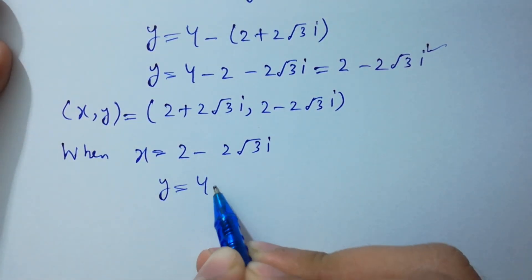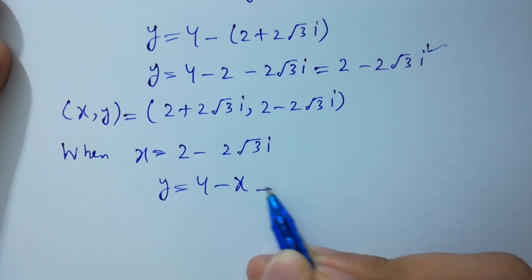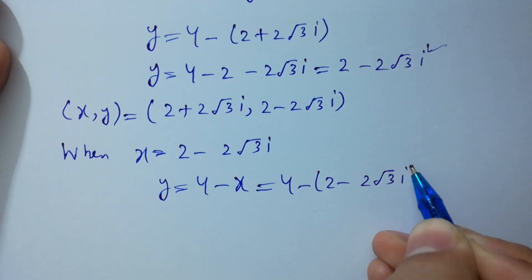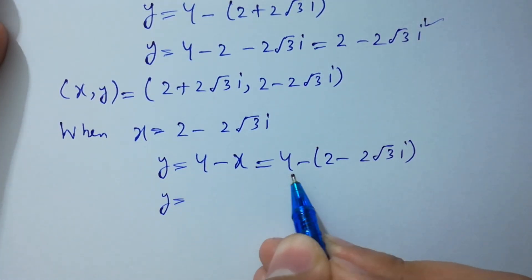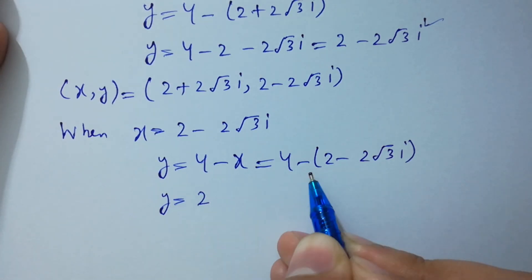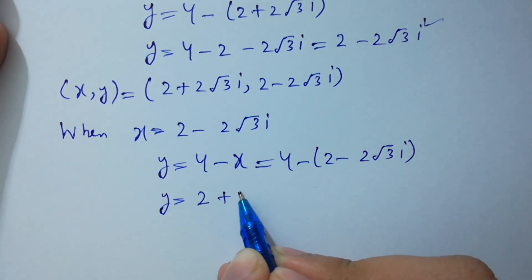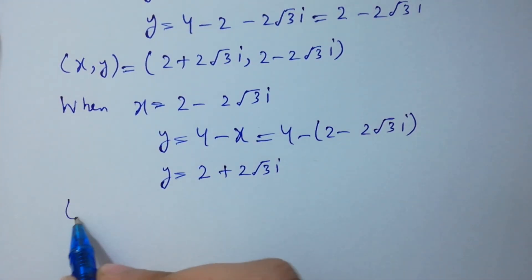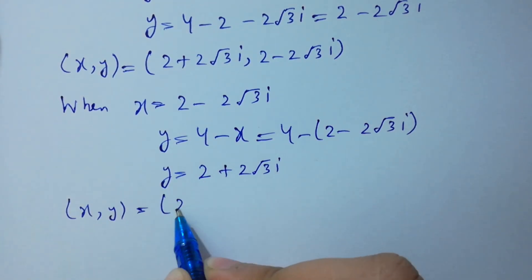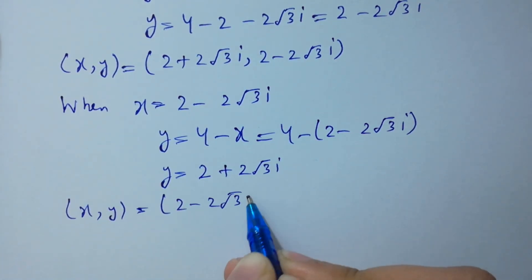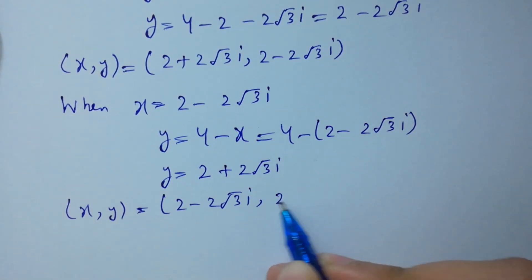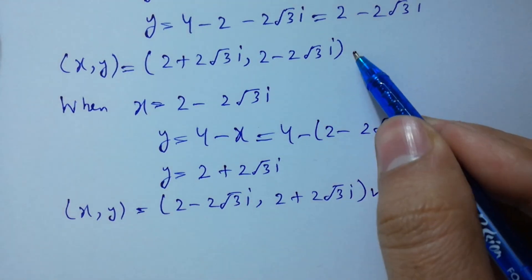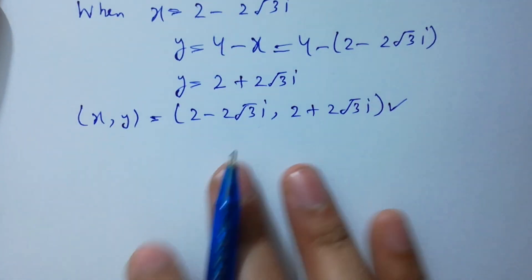When x equal to 2 minus 2√3 i, y equal to 4 minus x, which is 4 minus (2 minus 2√3 i). So y equal to 4 minus 2 plus 2√3 i, giving y equal to 2 plus 2√3 i. So the values are: x equal to 2 minus 2√3 i and y equal to 2 plus 2√3 i.